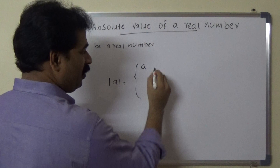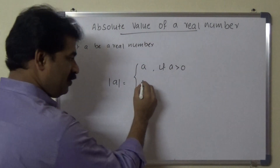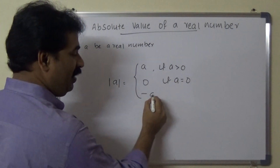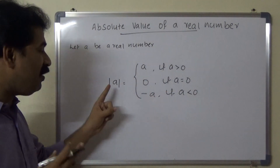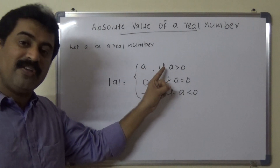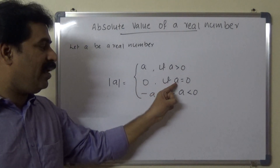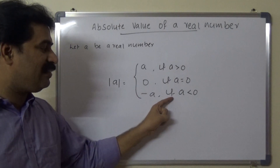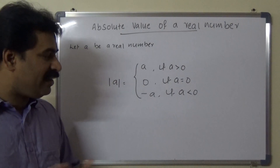It is defined as: absolute value of a equals a if a is greater than 0; equals 0 if a equals 0; and equals minus a if a is less than 0, that is, if a is a negative real number.